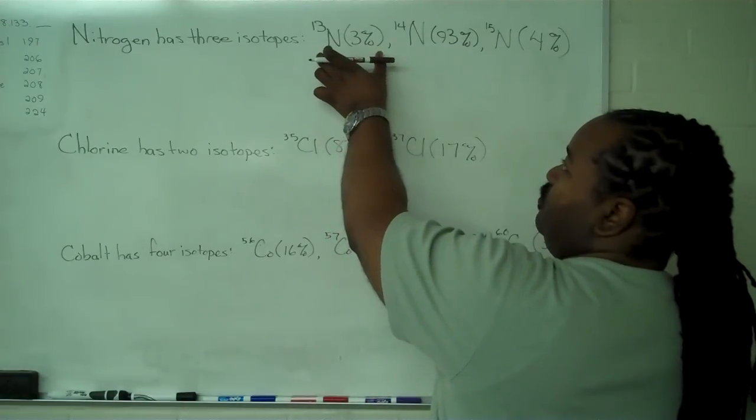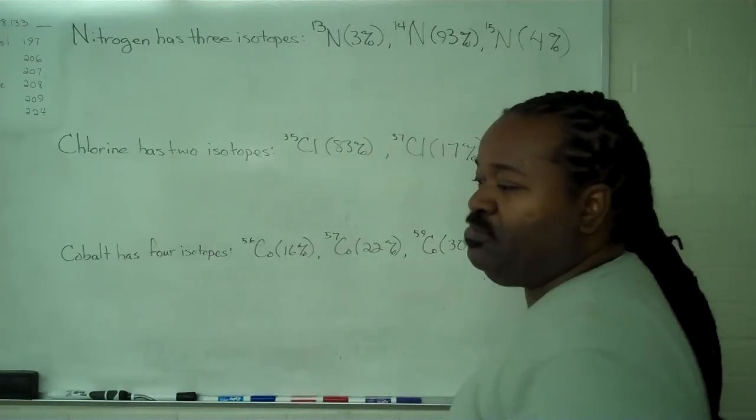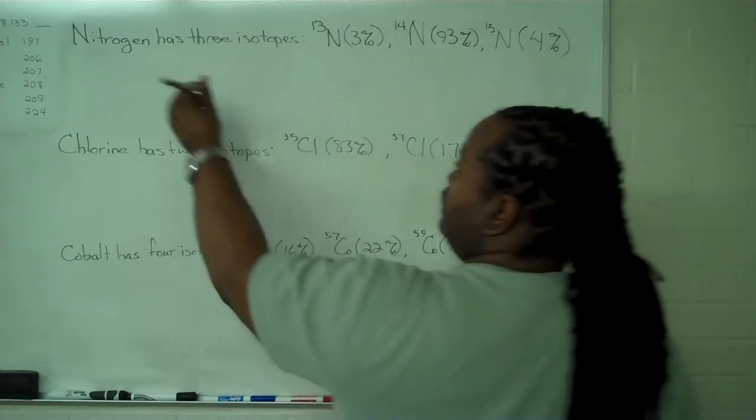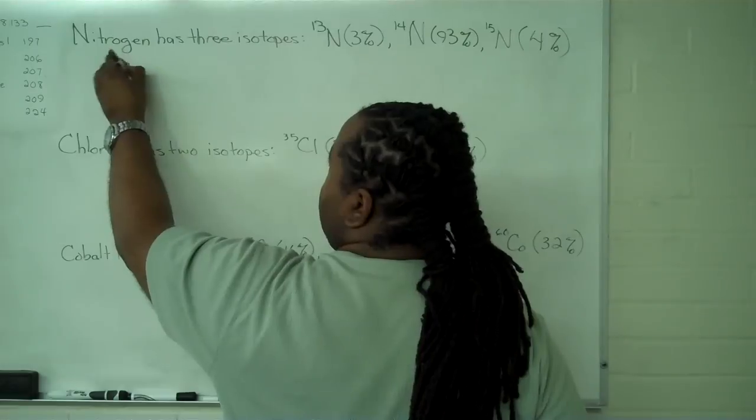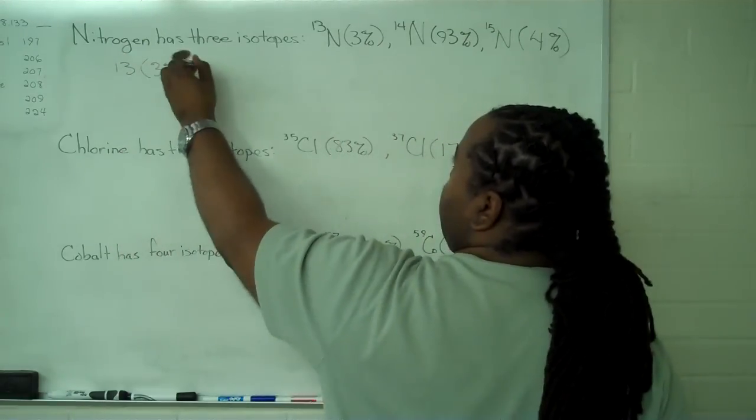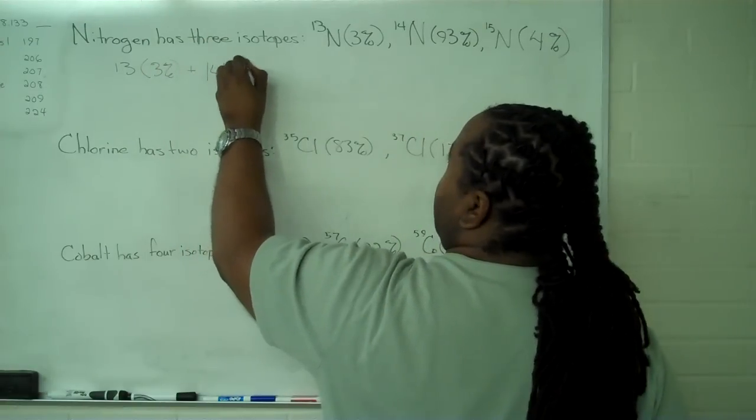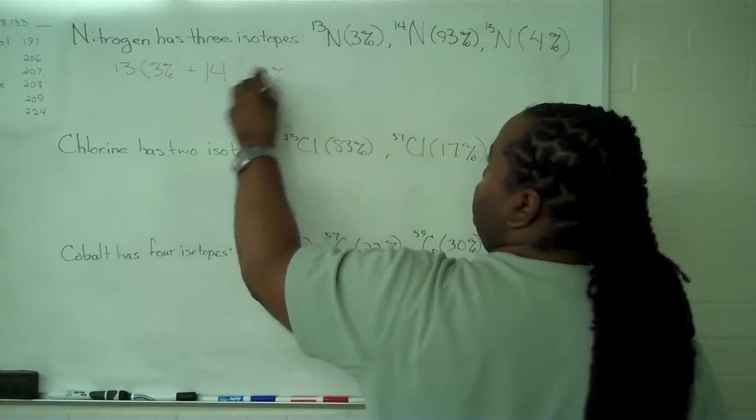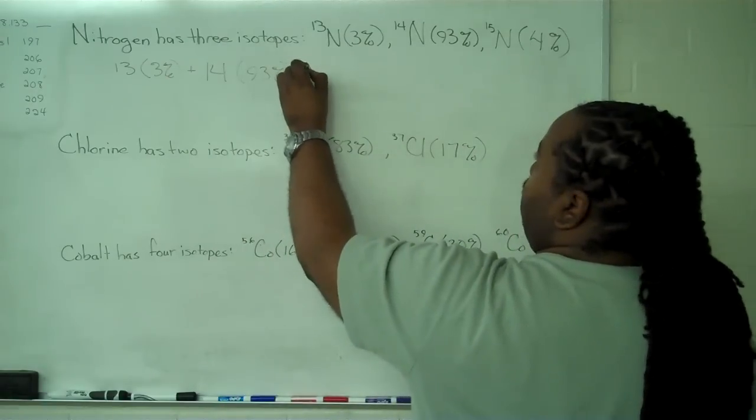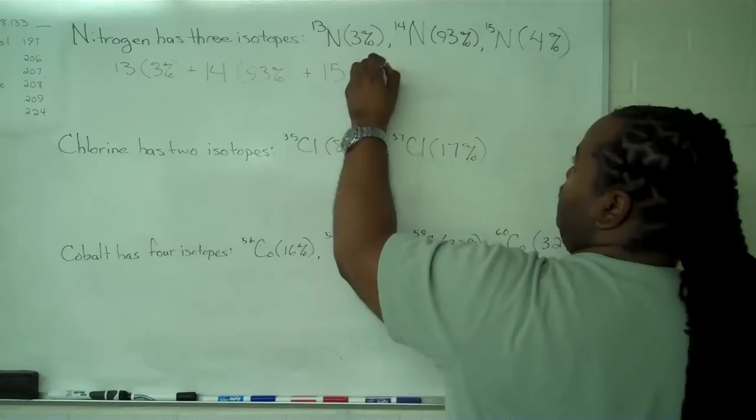we'll take the mass, an atomic mass unit, and multiply that by the relative abundance. So we get 13 times 3%, that's its contribution from nitrogen 13. We'll have 14 times 93%, that's the contribution from nitrogen 14. And the contribution to the mass from nitrogen 15 is 15 times 4%.